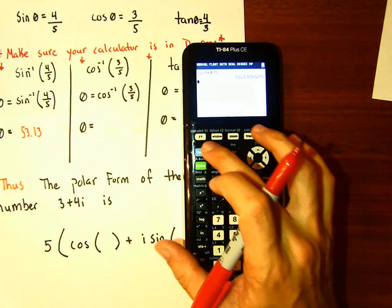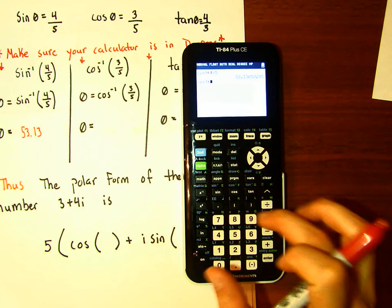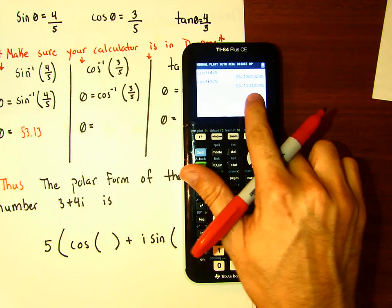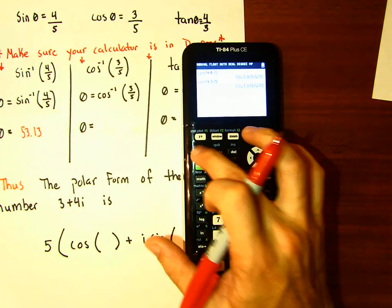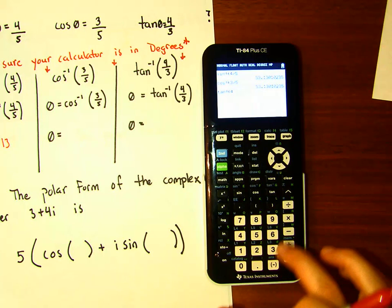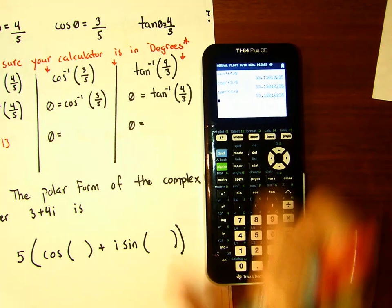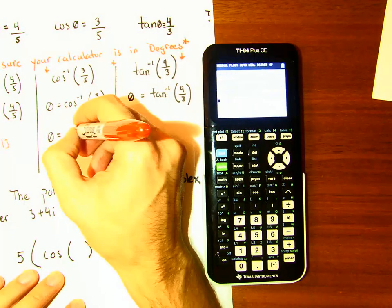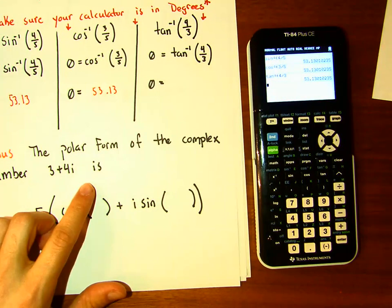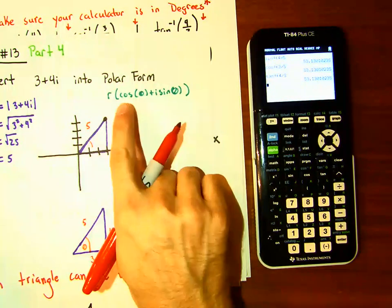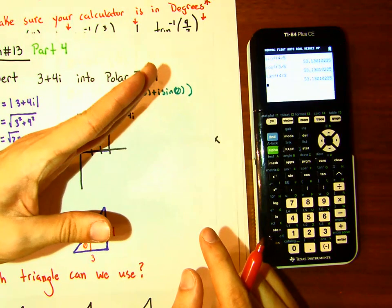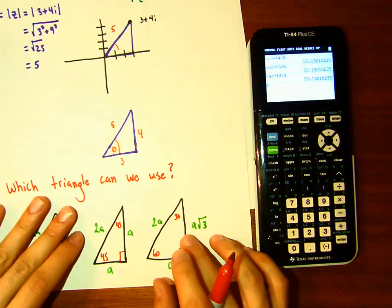Let's verify: inverse cosine of three over five gives the same result, and inverse tangent of four over three — four divided by three — also gives the same number, 53.13 degrees. When we put the complex number in polar form, we need to find that argument — that angle of rotation.